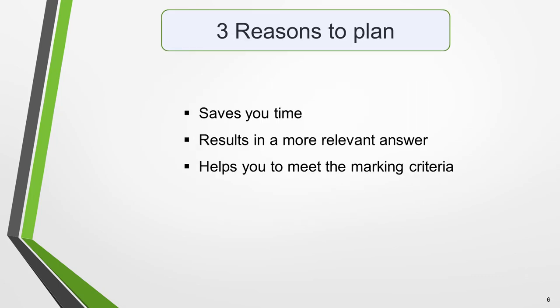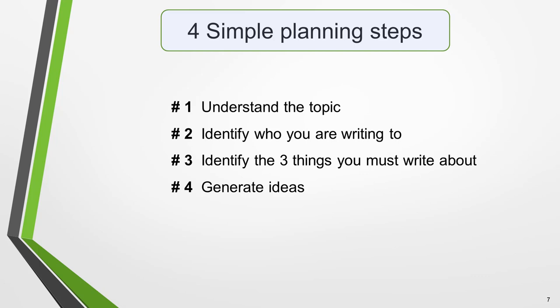It's essential to plan your letter before you begin writing. Planning will save you time, it will result in a more relevant answer, and it will help you to meet the marking criteria. There are four steps to writing a high-scoring informal letter: 1. Understand the topic. 2. Identify who you're writing to. 3. Identify the three things you must write about. 4. Generate ideas. Once we've completed this quick and simple process, we'll be ready to write a high-quality letter.